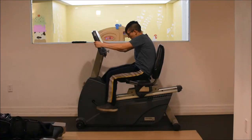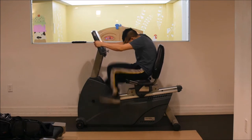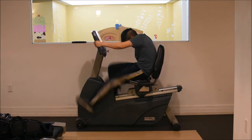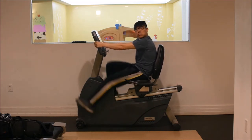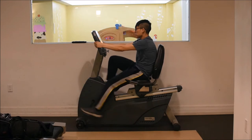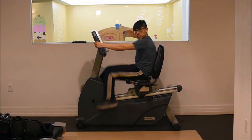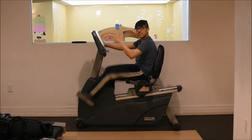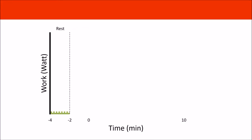Now you can start pedaling — but not so fast. You don't have to start off so vigorously. Let's just try to maintain sixty revolutions per minute and we'll control the resistance. Right now you are in the unloaded cycling phase and there is no resistance.